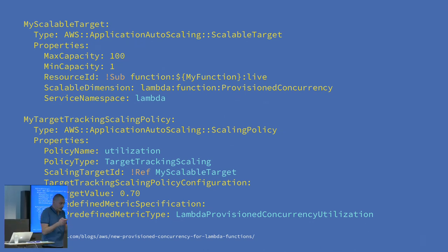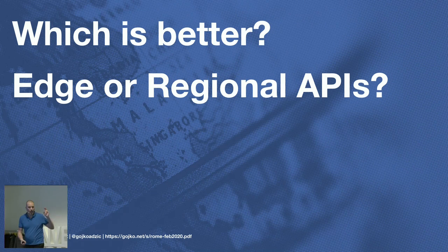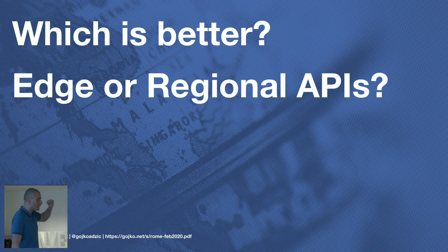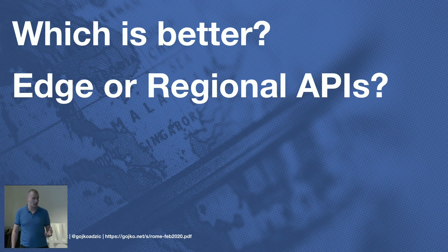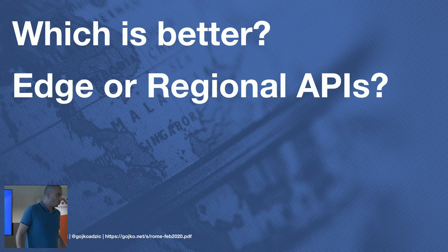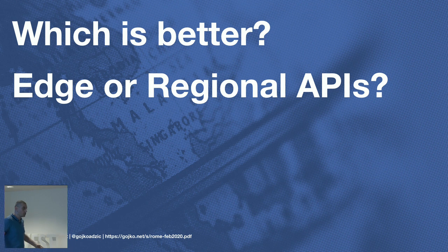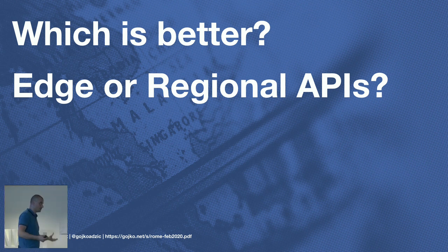Rule number two: optimize for start time — forget everything else. If you can do that, things work magically. The second interesting area is using regional versus edge APIs. Amazon offers two types: a regional API sits where you deployed it, so a client from Rome connecting to an Oregon regional API goes over the public internet to Oregon. An edge API deploys to the CDN, so connecting from Rome to an Oregon edge API likely hits Frankfurt first, then goes to Oregon via Amazon's internal pipes.